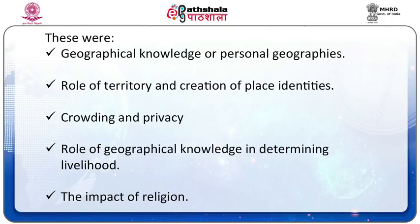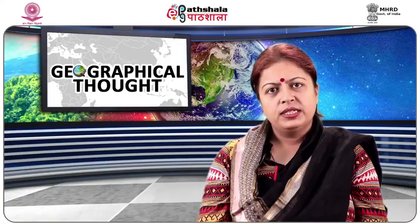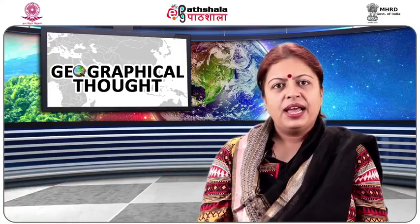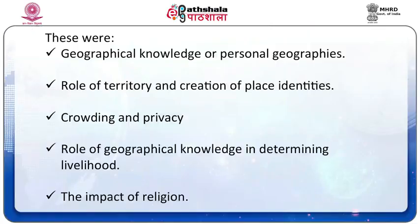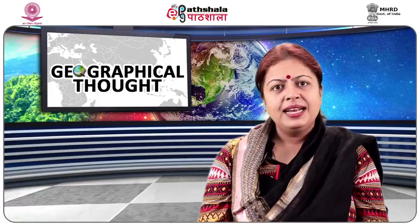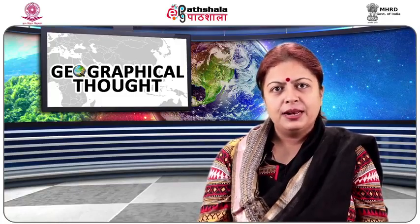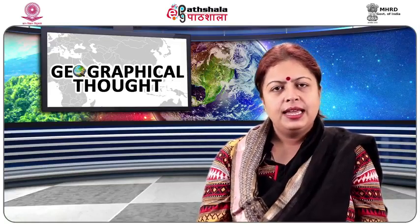The third theme was crowding and privacy. Crowding of a place resulted in physical as well as psychological tensions and stress, which were eased out by cultural and social institutions and infrastructures. Privacy and seclusion also influenced the thought processes and actions of humans. Privacy was thought to be required by every individual, within which they were supposed to develop their own personal world. The fourth theme was the role of geographical knowledge in determining livelihood. For sustenance, humans engaged themselves in economic activities, utilizing their geographical knowledge for deciding on economic activities. Thus, he planned his actions for sustenance, which was considered an essence of pragmatism, enabling him to distinguish between life-sustaining and life-destroying activities.